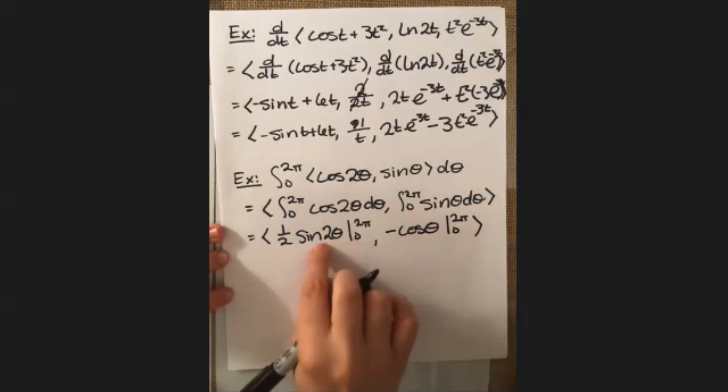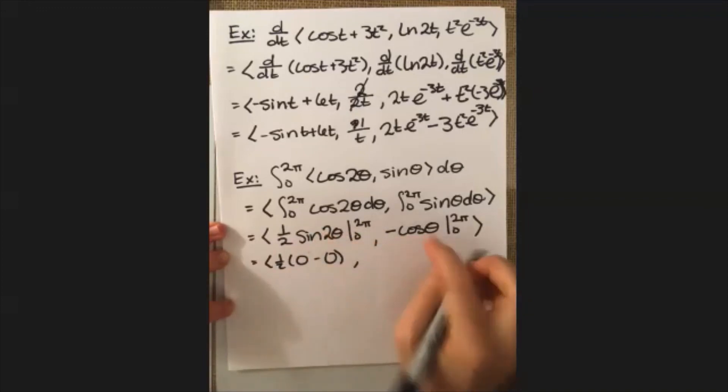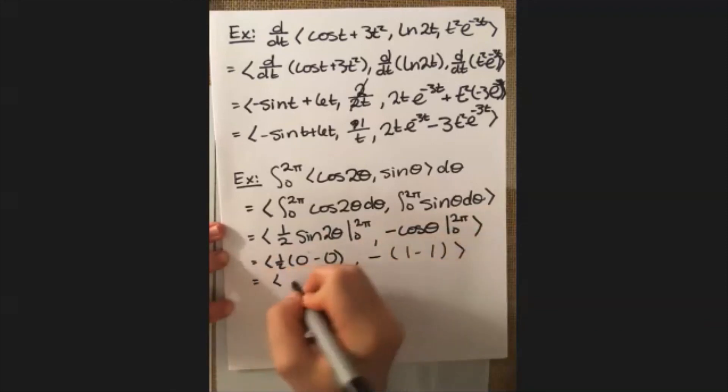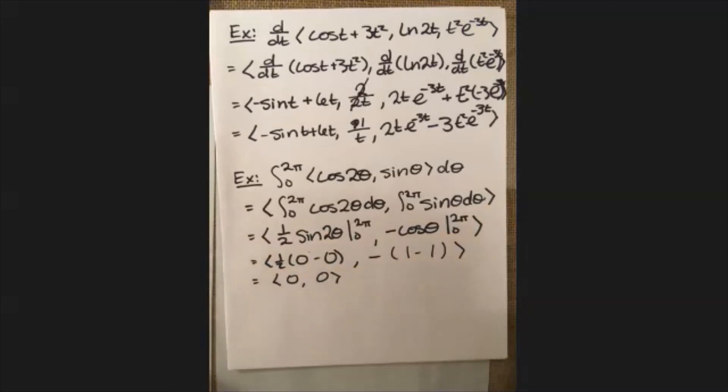So here we're going to wind up with, we plug in 2 pi into sine and you get 0 minus, plug in another 0, and you're going to get 0. And then we get negative cosine of 2 pi is going to be 1. Cosine of 0 is also equal to 1. So it looks like in this case, we just wind up with 0, 0 for our final answer here.